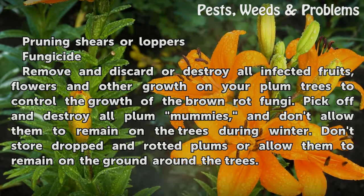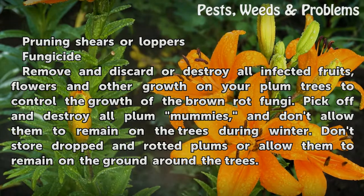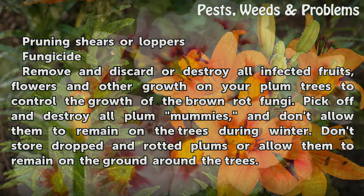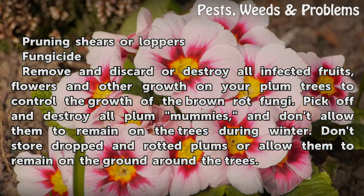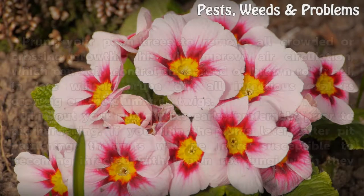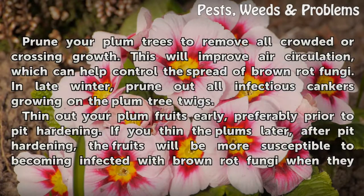Remove and discard or destroy all infected fruits, flowers and other growth on your plum trees to control the growth of the brown rot fungi. Pick off and destroy all plum mummies, and don't allow them to remain on the trees during winter. Don't store dropped and rotted plums or allow them to remain on the ground around the trees.